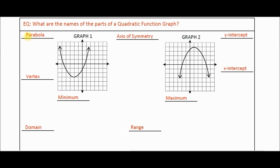The first word is parabola — we've already talked about this in the flipbook. A parabola is the shape of a quadratic graph. So if you graph any quadratic function or equation, you're going to end up with a parabola.